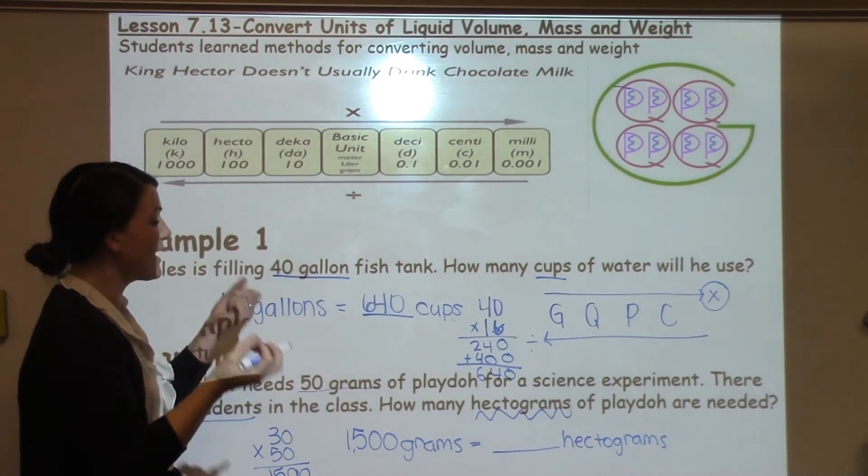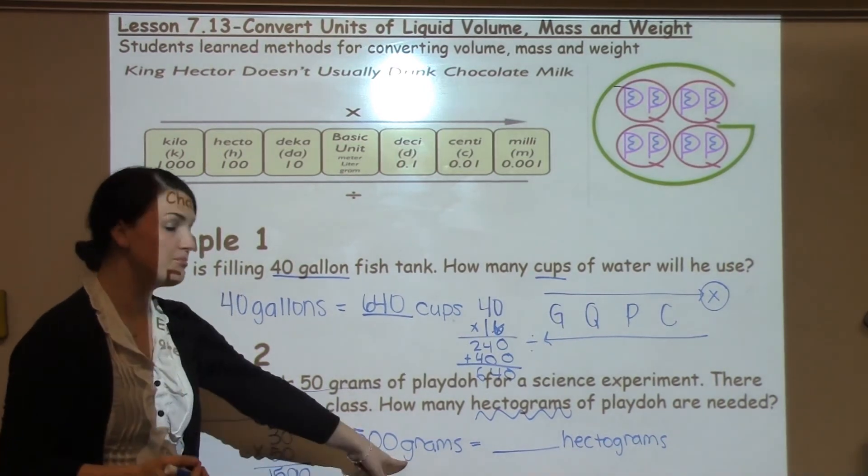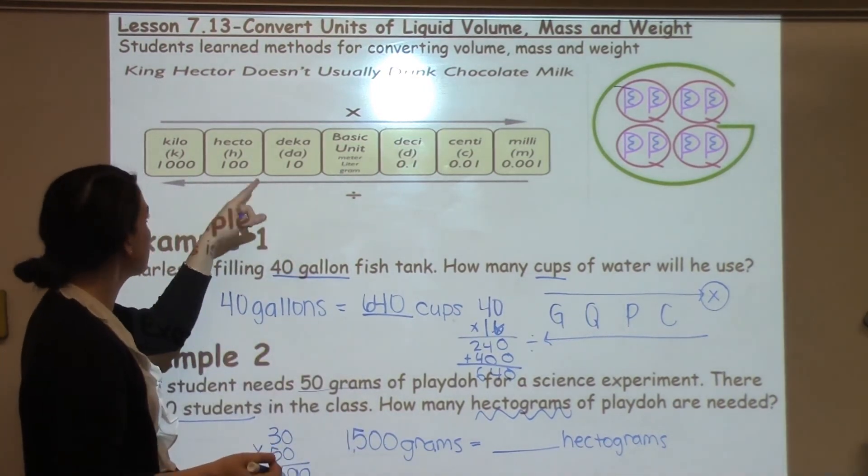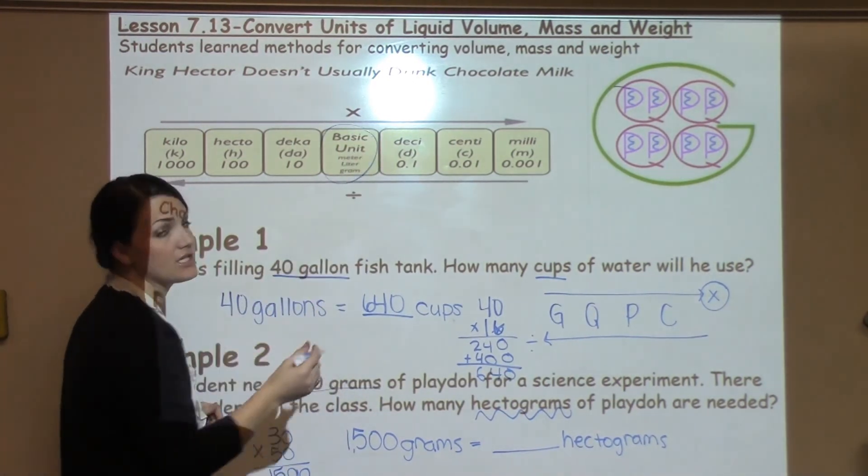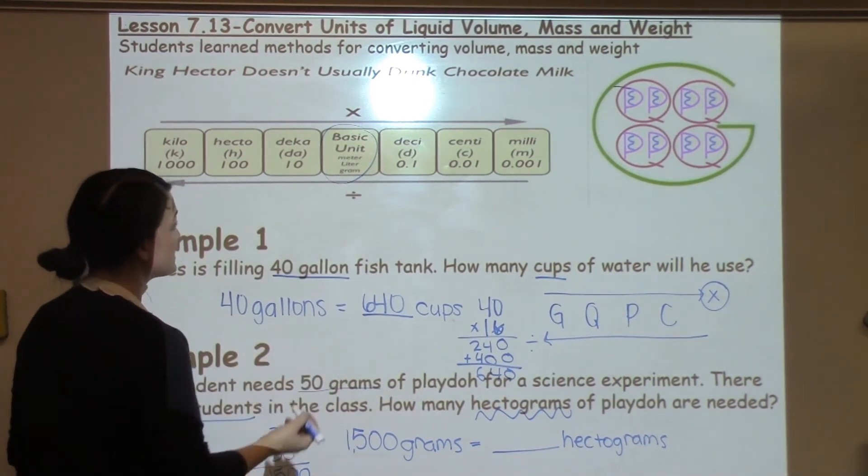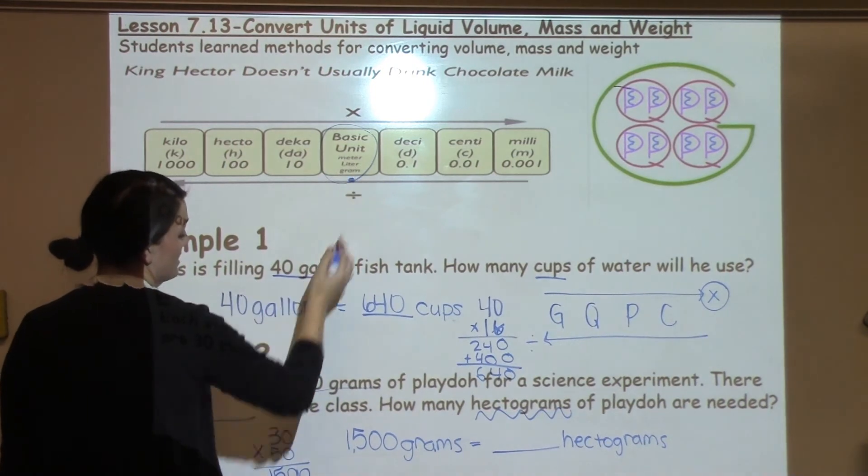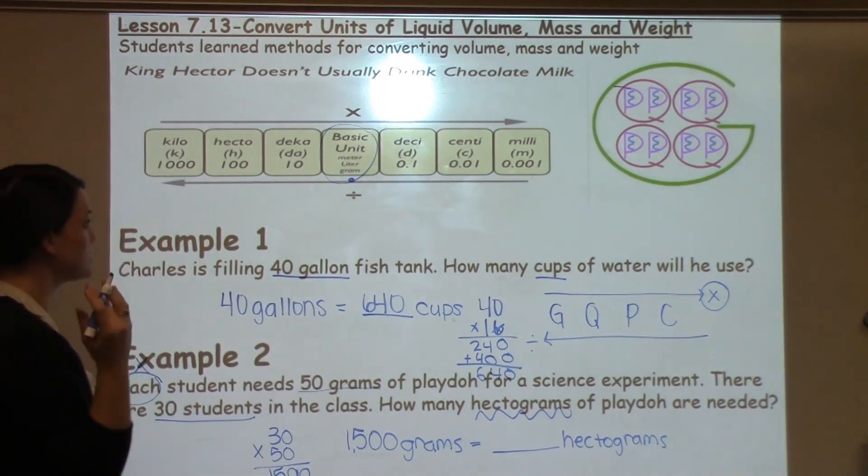So I always start with what I have, and I just have plain old grams, not centigrams, decigrams. They're just the plain old basic unit, grams. So I get to start right here in the middle. I want to move to hectograms.